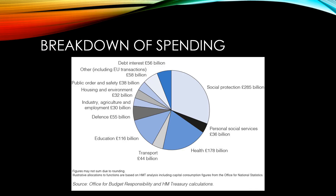Other key areas of spending for the UK government include defence, which funds our military services; transport, which looks after the infrastructure of roads; and public order and safety, which includes the police service and fire services. You may have noticed at the top debt interest at £56 billion. The longer we have a deficit budget, the higher our overall debt will be and the more debt interest we're going to have to pay in the future.